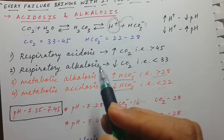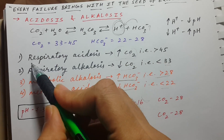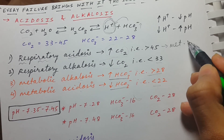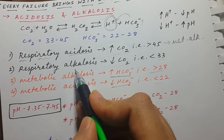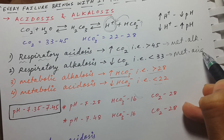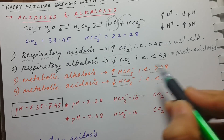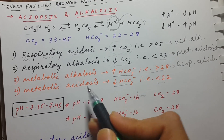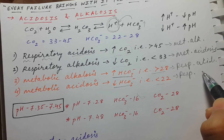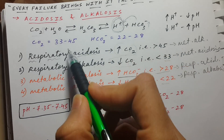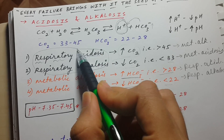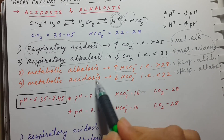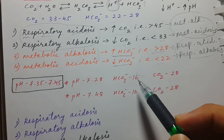The kidneys and lungs act as compensatory partners. If the patient has respiratory acidosis, the compensatory mechanism will be metabolic alkalosis. Respiratory alkalosis is compensated by metabolic acidosis. Metabolic alkalosis is compensated by respiratory acidosis, and metabolic acidosis is compensated by respiratory alkalosis. If there is a problem in the lungs, the kidneys will compensate to maintain homeostasis, and vice versa.